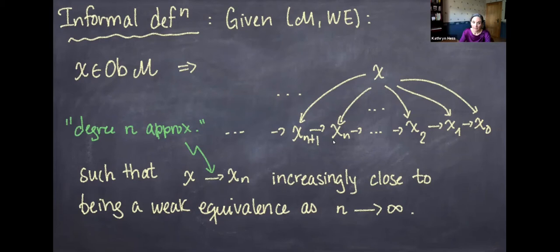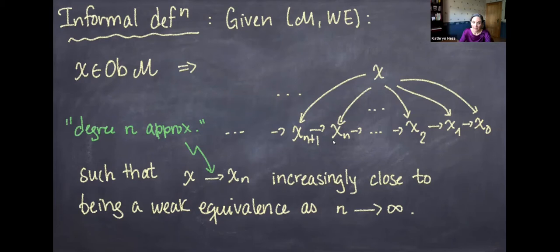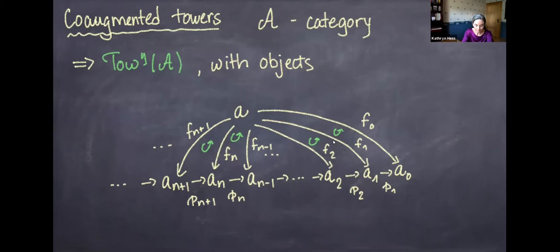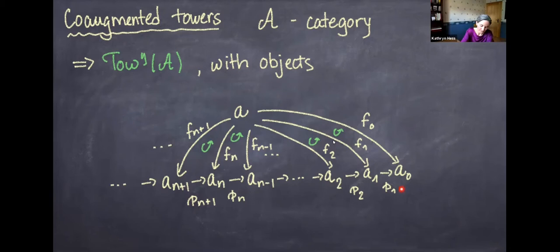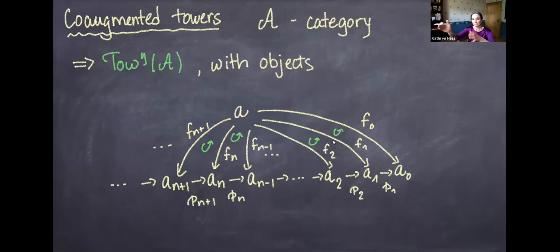Let's make this more formal. The framework is what we call co-augmented towers. Suppose you have some category A. I'm going to define a category of co-augmented towers in A — these are sequences of morphisms in A together with morphisms out of a fixed object into each of them, with all triangles commuting. My tower is written lying down because the blackboard is horizontal; it would take too much room to write it vertically.